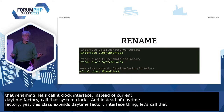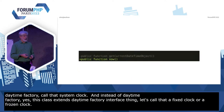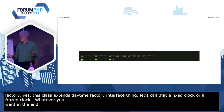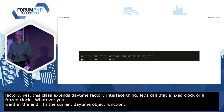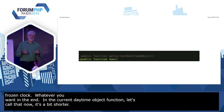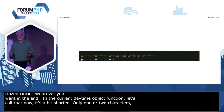And instead of the class that extends DateTimeFactoryInterface, let's call that a fixed clock or a frozen clock, whatever you want in the end. And the `getCurrentDateTimeObject` function, let's call that `now`. That's a bit shorter — only one or two characters, but hey. And that is the clock interface.